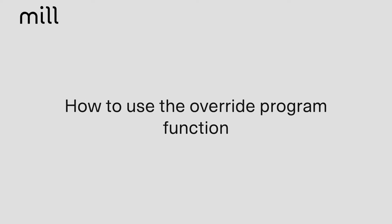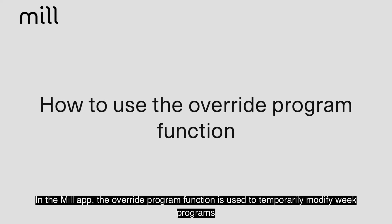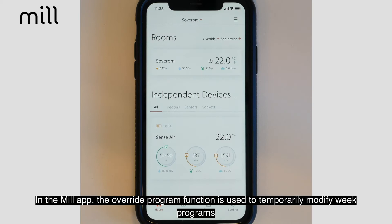How to use the override program. In the Mill app, the override program function is used to temporarily modify weak programs.